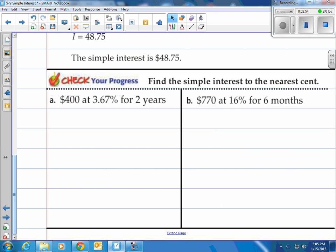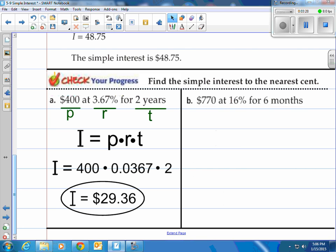Find the simple interest to the nearest cent. We have $400 being invested at 3.67% for two years. First off we need to know what pieces we have. We have the principal, the rate, and the time. So remember our formula, I equals PRT. Take the P, the R, and the T, place them into the formula, and then just multiply all three of them. So 400 times 0.0367 times 2 will equal $29.36.